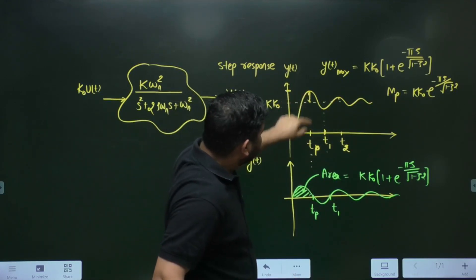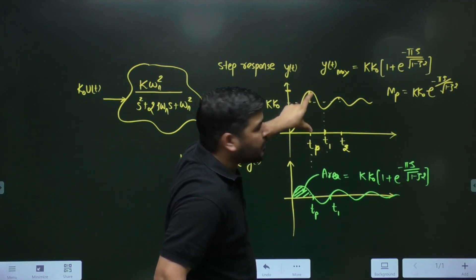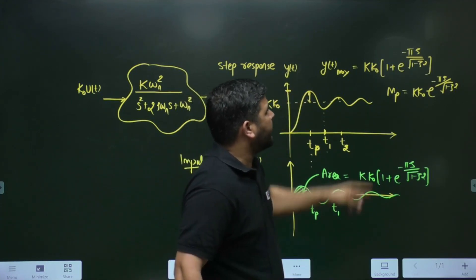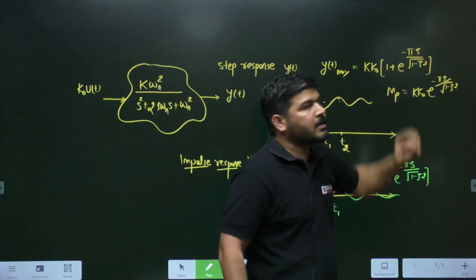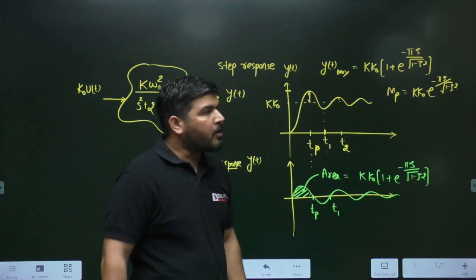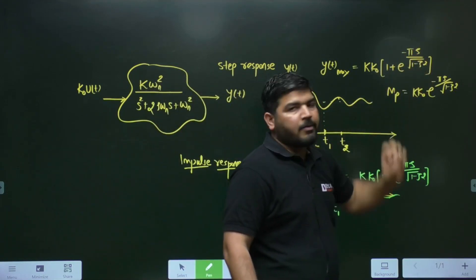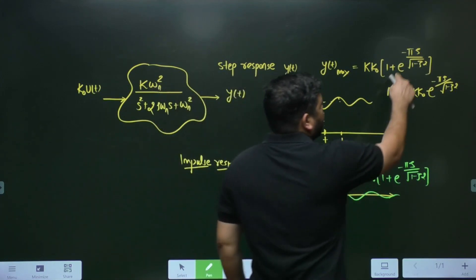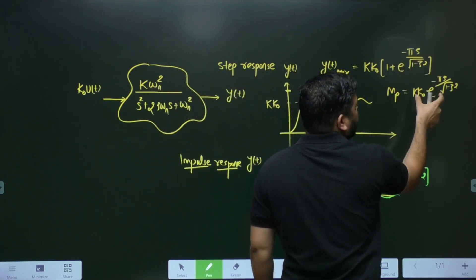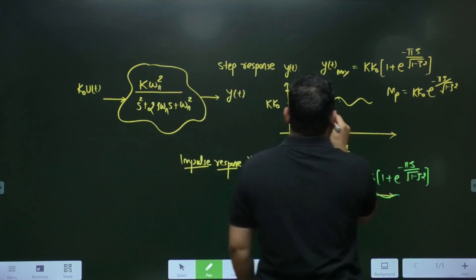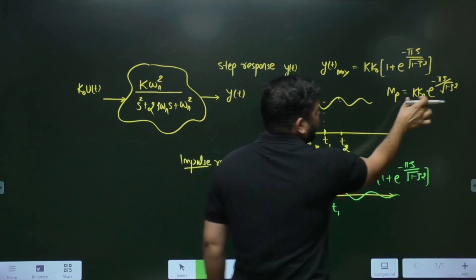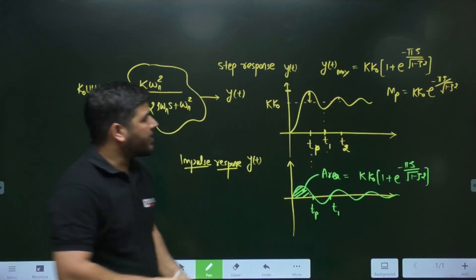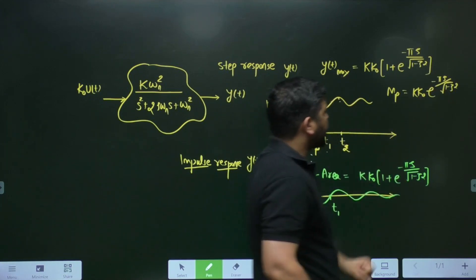At the peak time, you get the maximum output Y(t_max), which equals KK0 times (1 + e^(−πζ / √(1−ζ²))). This represents the peak value. The overshoot MP is KK0 · e^(−πζ / √(1−ζ²)).